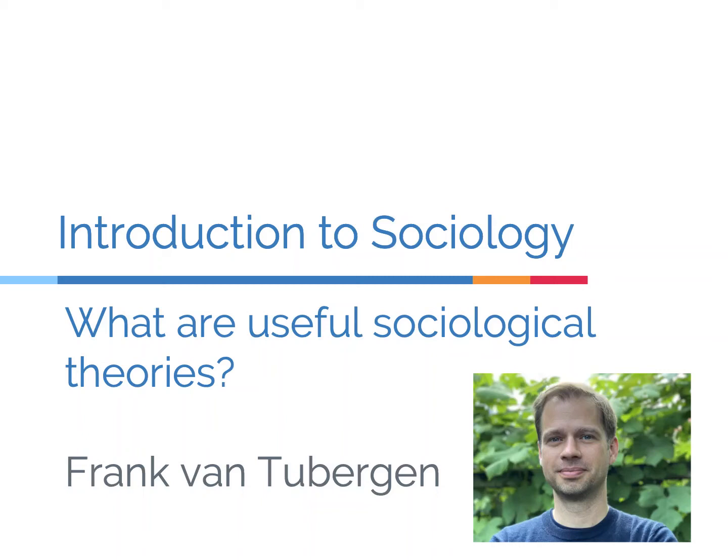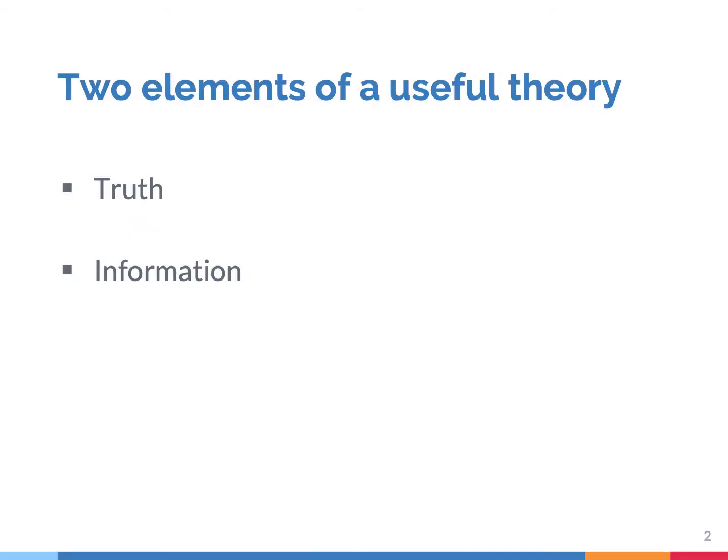In this lecture we will discuss the usefulness of sociological theories. Sociological theories help us to understand the social world, but some theories are better or more useful than others, and we want to have the most useful theories. Two elements determine how useful a theory is, namely truth and information.